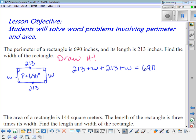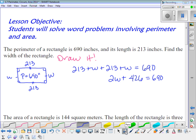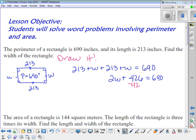So 213 plus W plus 213 plus W has to add up to 690. Then you combine your like terms. So we have 2W plus 426, and that has to equal 690.